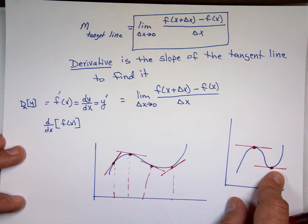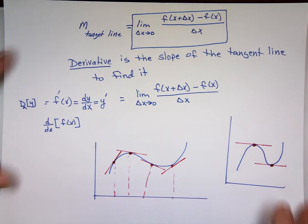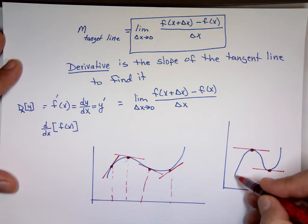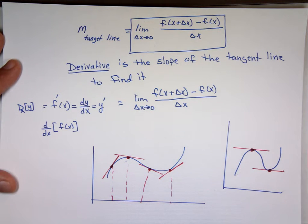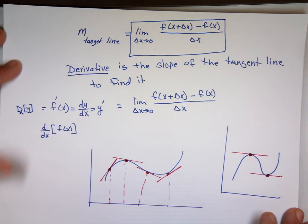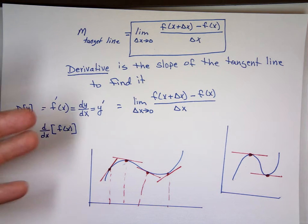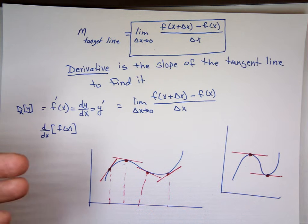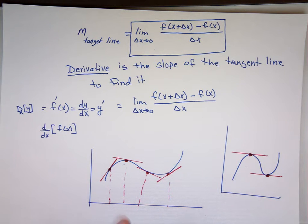We can also use the derivative to graph a function. The derivative tells you if the function is increasing or decreasing. That's the application — Chapter 4. I'm not going to talk about applications until we know how to take the derivative. This is how we take the derivative using what I call the four-step process.